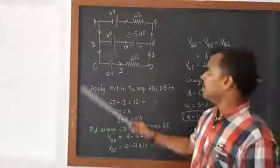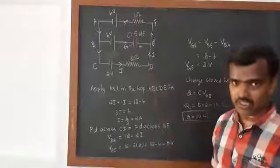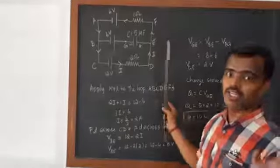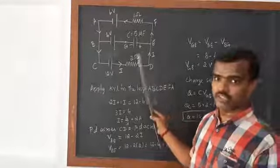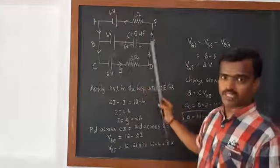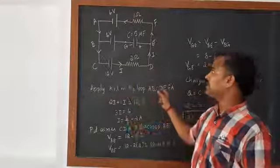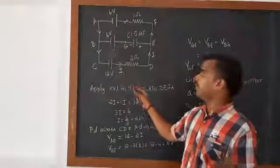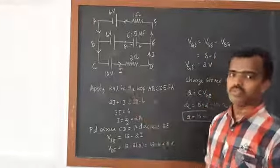What we are going to do is first calculate the current flowing in the entire circuit. After that we want to calculate the potential drop across BE. If we find the potential drop across BE, then we can find out this value, because across the potential difference we have some value present which we should subtract to get the voltage drop across the capacitor.